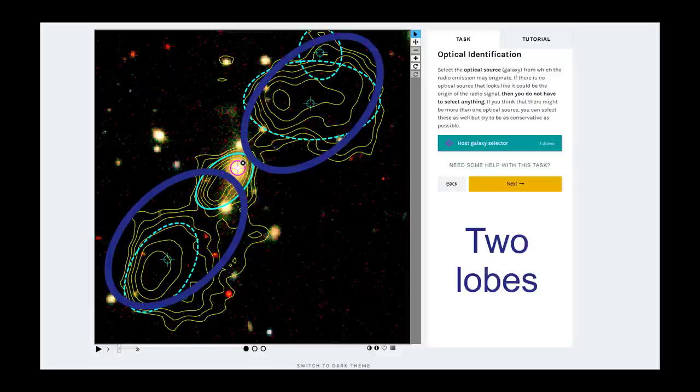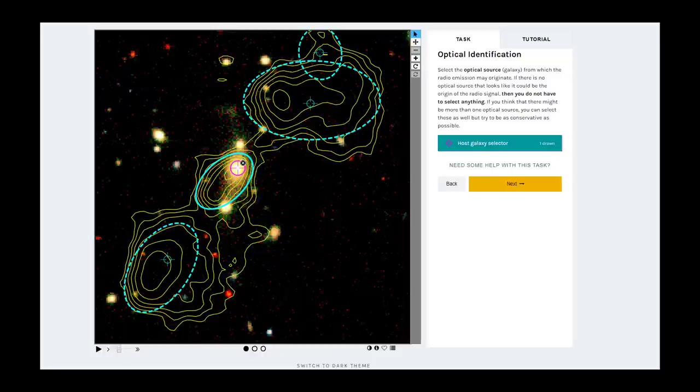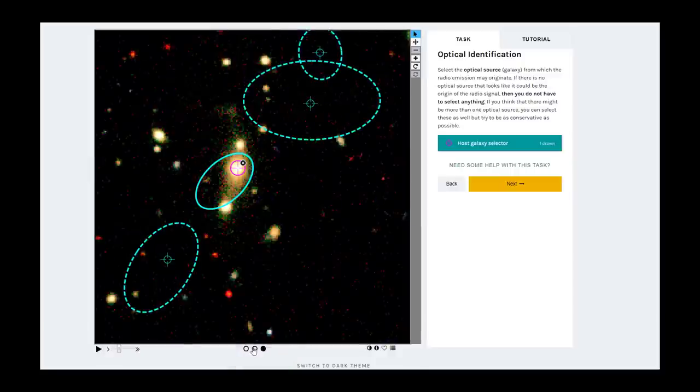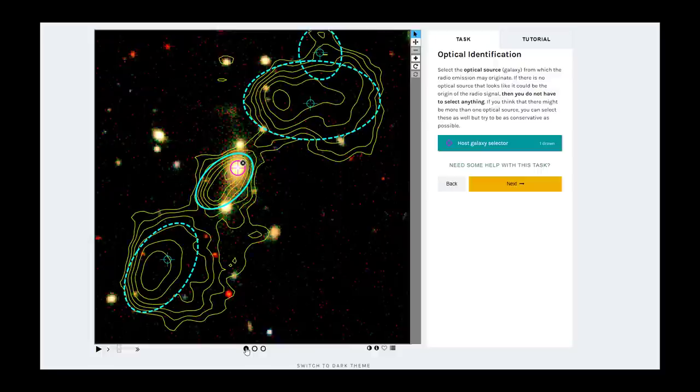It may happen that the yellow contour lines block the optical image. In this case, you can use the tools in the bottom of the screen that we mentioned earlier in this video in order to toggle the yellow contour lines on and off. You might encounter images where there is no obvious host galaxy. In this case, you do not need to select anything. Once you are done, you can move on to the third and final task by clicking next.